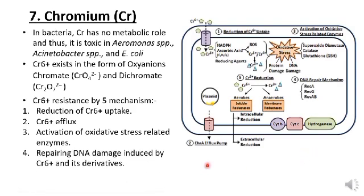The fourth mechanism is repairing DNA damage induced by chromium and its derivatives. DNA is repaired by SOS response activation, which involves activation of RecA, RecG, and RuvAB, which is a helicase enzyme. The fifth is chromium reduction, where chromium is reduced aerobically and anaerobically to a less toxic form. Aerobic reduction uses cytoplasmic soluble reductase and NADPH, while anaerobic reduction uses membrane reductase belonging to non-transport chains such as cytochrome B, cytochrome C, and hydrogenase complex.